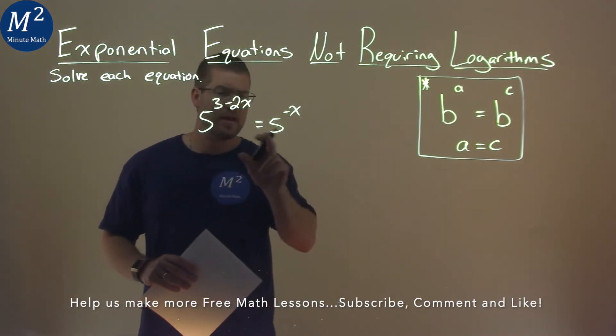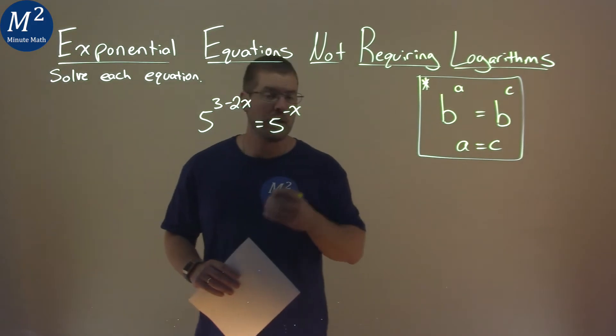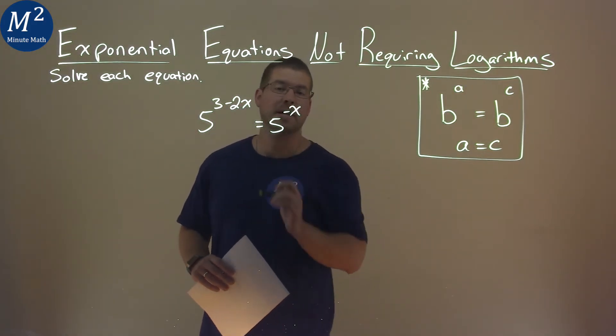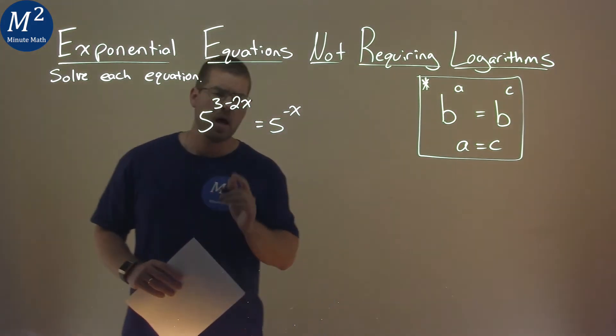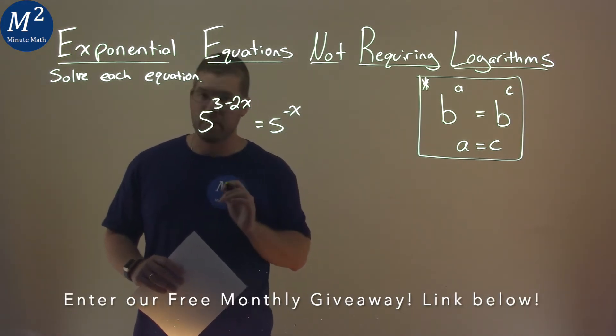Well, notice we have the same base here of 5. When that happens, we just have to worry about the exponent. So we can set the exponents just equal to each other now.